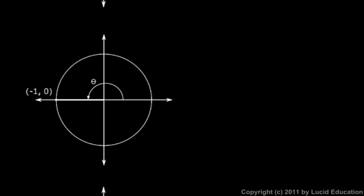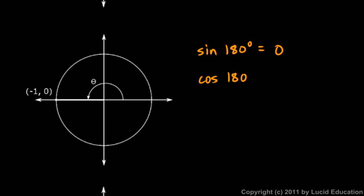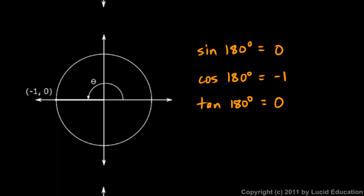Let's look at 180 degrees. We rotate around and land at the point (-1, 0). The sine of a 180 degree angle is the y-coordinate, which is 0. The cosine is the x-coordinate, which is negative 1 — and the negative sign matters there. The tangent of 180 degrees is y divided by x, so that's 0 over negative 1, which is just 0.